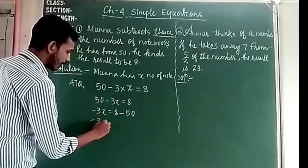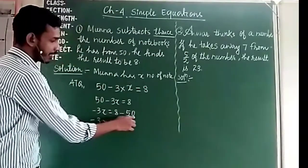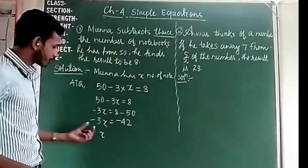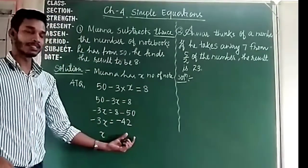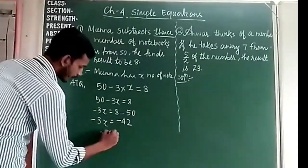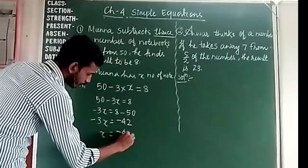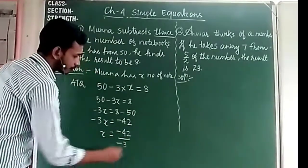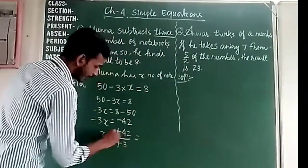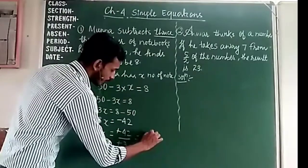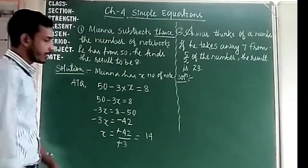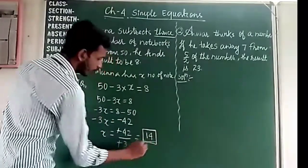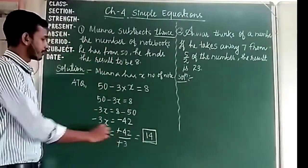So we get minus 3x is equal to 8 minus 50, which is minus 42. Now we transfer minus 3 to the right-hand side as division. Negative and negative cancel out, giving x equal to 14. So Munna has 14 notebooks — that is the answer.